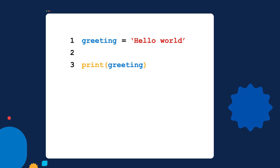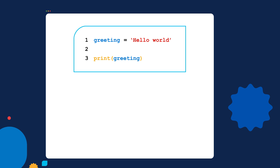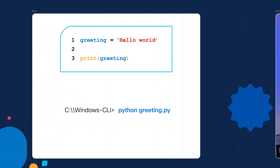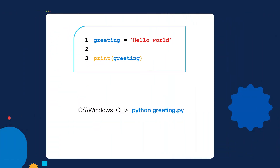We have our greeting.py script, it's been created. We're now going to go to the CLI so we can run our script. I'm going to run the Python command and specify the name of our script, which is greeting.py. I want your prediction — when I hit enter, what output do you think we might see? So I'm going to hit enter, and the script simply prints out hello world.